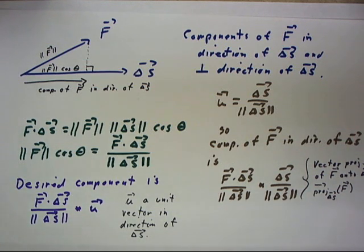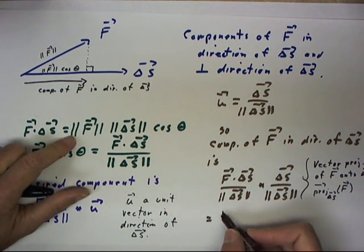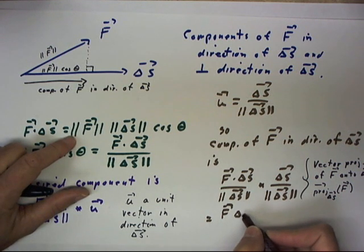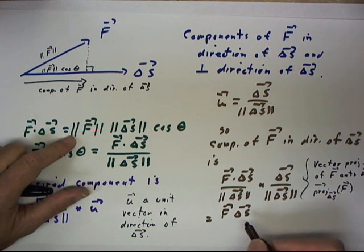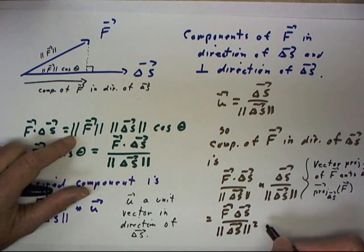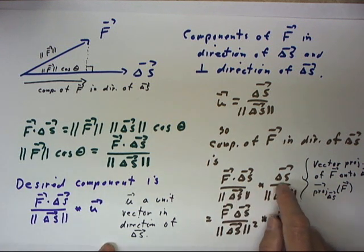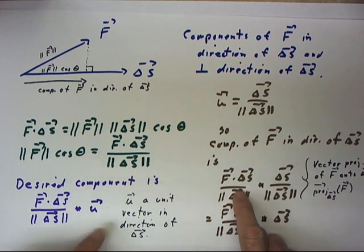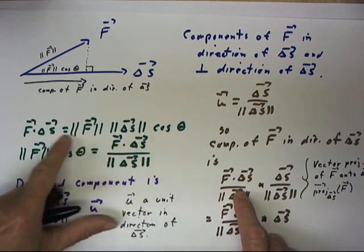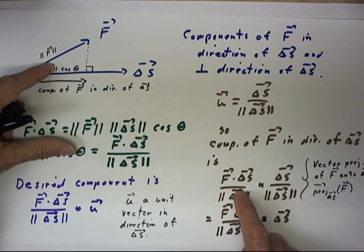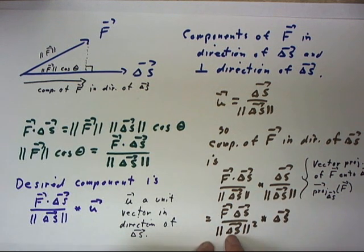Now this vector can be written as f delta s over the magnitude of delta s quantity squared, all multiplied by delta s. I prefer this notation because this expression can be traced back to the definition of the dot product and to the picture of this triangle, whereas this notation kind of obscures that.